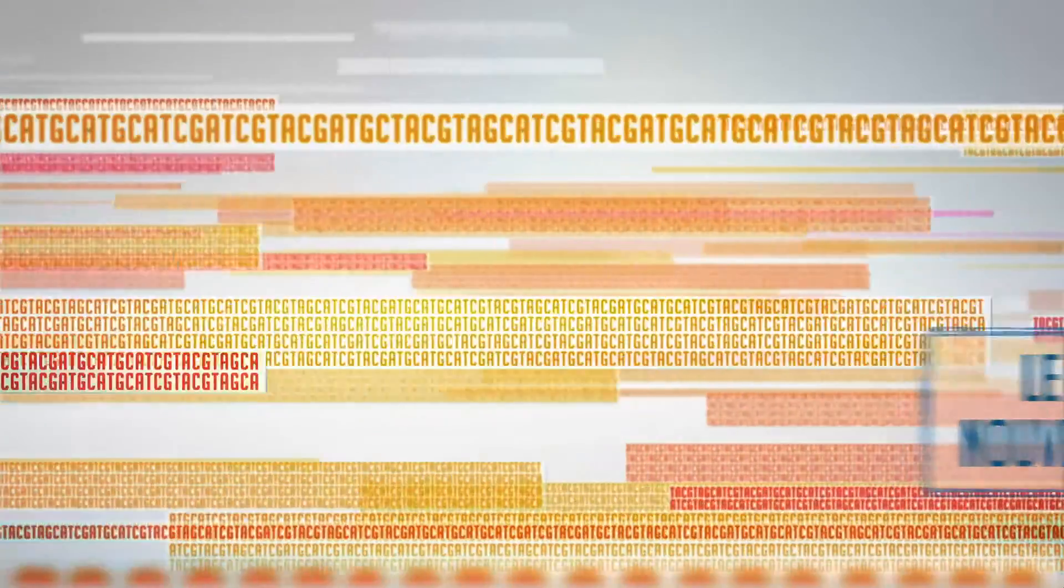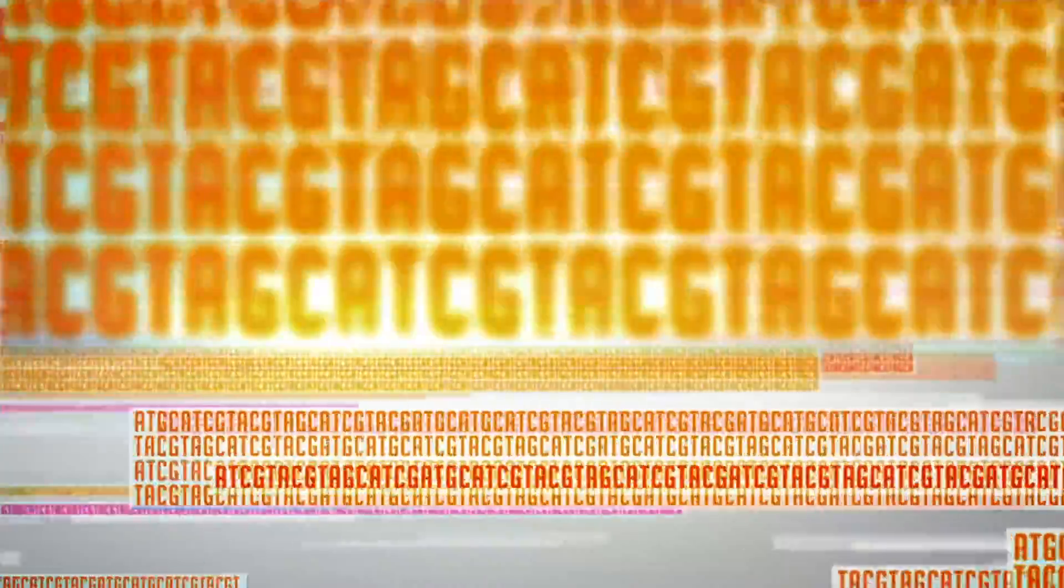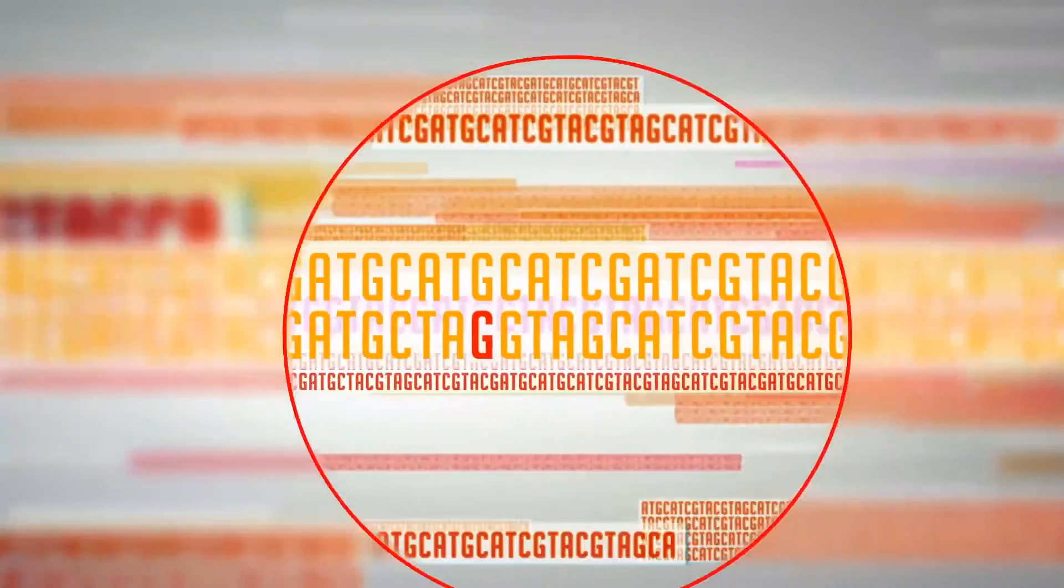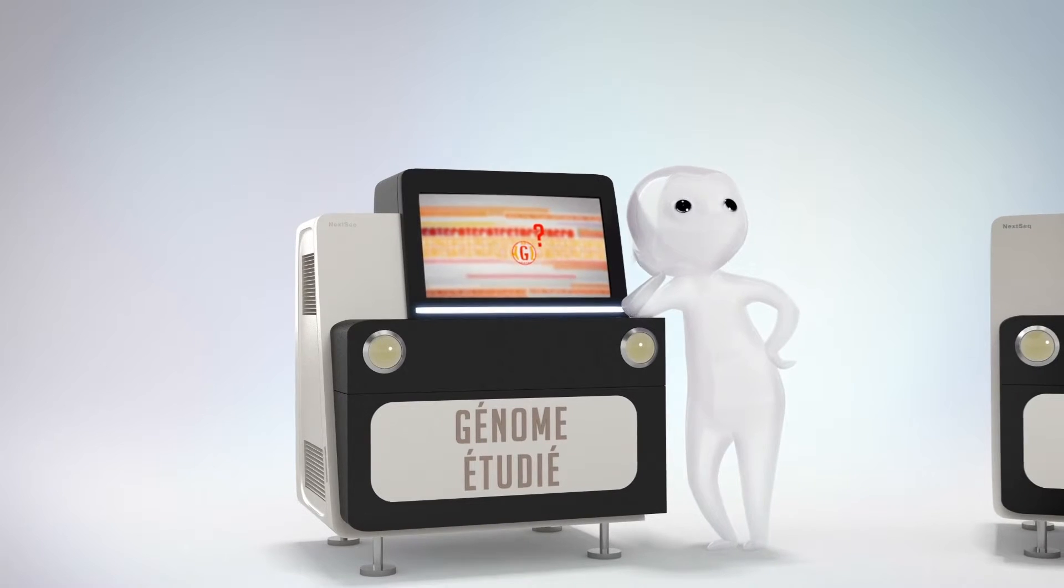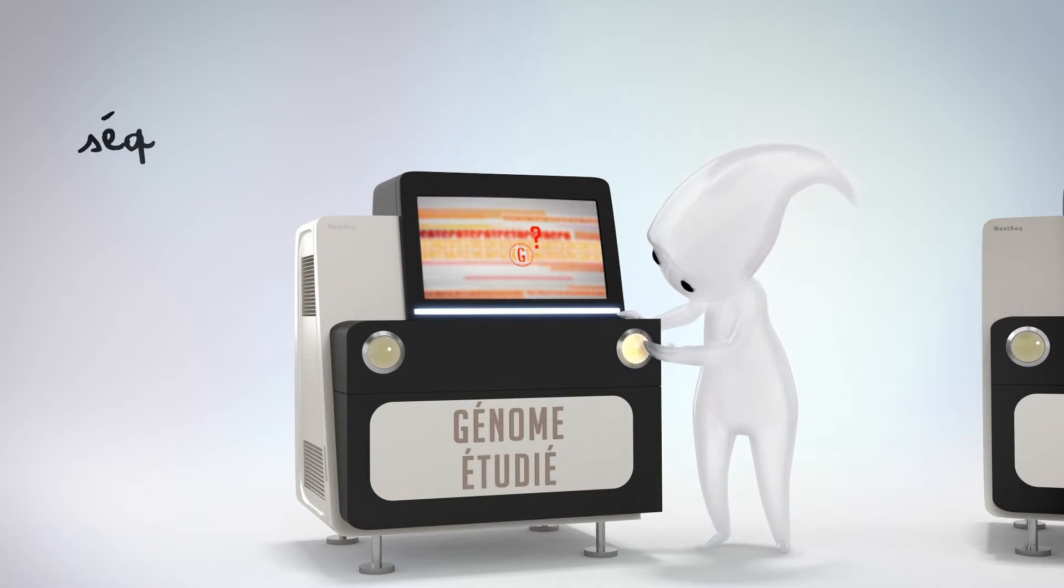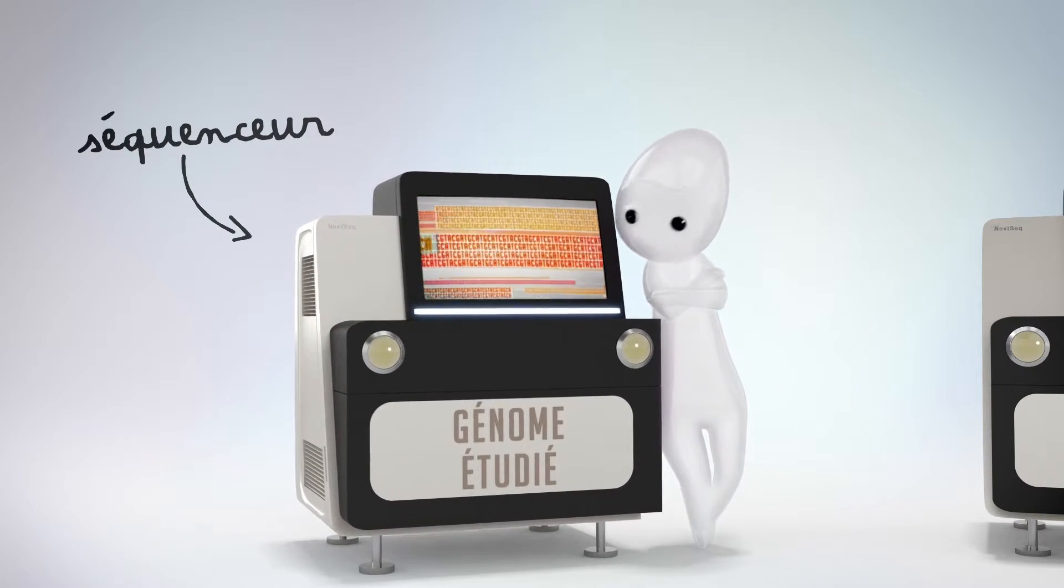Le séquençage est une technique qui consiste à lire l'ADN. Jusqu'à récemment, il était impossible de séquencer de grandes quantités d'ADN chez une personne. Les explorations dans un contexte de maladies génétiques se limitaient donc à étudier un ou quelques gènes suspectés en fonction des hypothèses médicales. Des évolutions technologiques majeures permettent aujourd'hui de séquencer rapidement et à moindre coût la totalité de l'exome ou du génome d'un individu. C'est ce qu'on appelle le séquençage nouvelle génération.